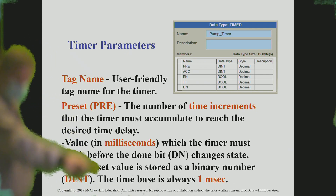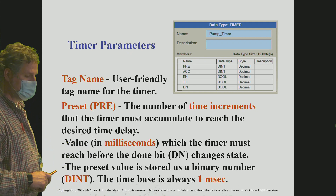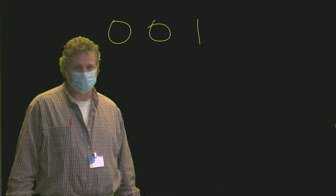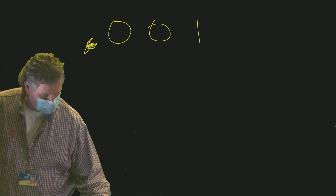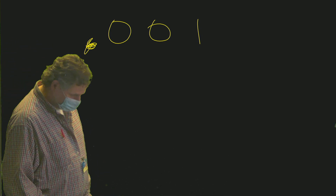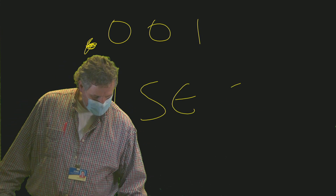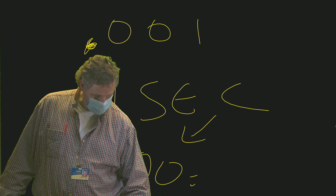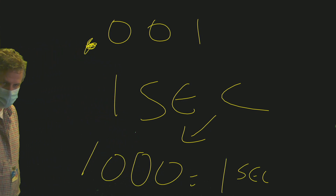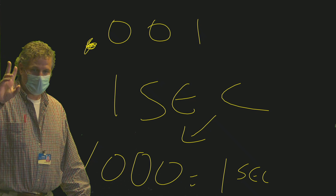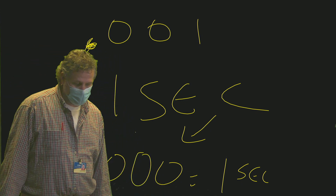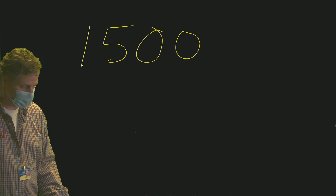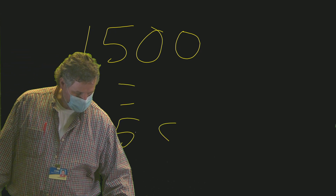The last piece is the time base. The time base is always one millisecond — that's 0.001. So to get one second, what value would you put in? You'd have to put a value of 1,000 to get one second. Keep that in mind — if we're asked for 1.5 seconds, we would enter 1,500, which equals 1.5 seconds.